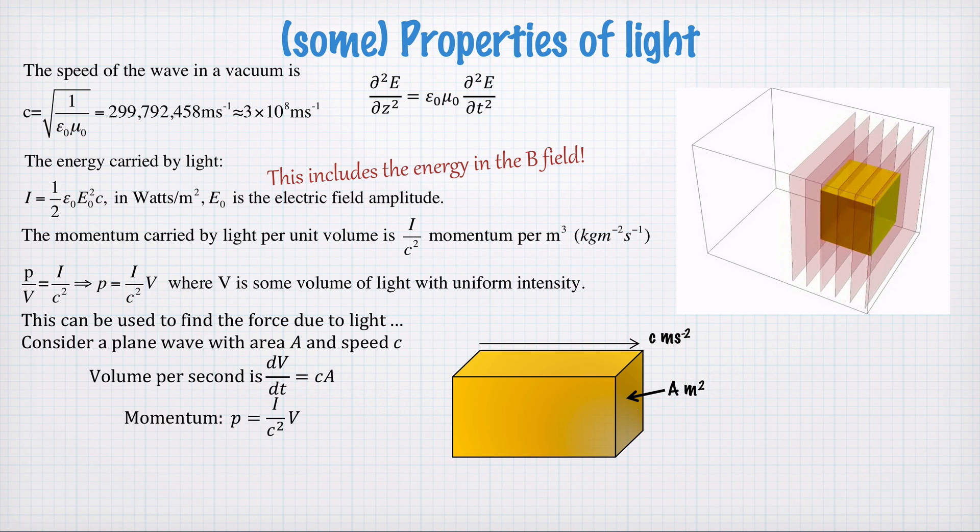The momentum, as we've said before, is I on c squared times V. So we can combine these two equations to calculate the force, remembering that force is dp/dt, the rate of change of momentum. So force is equal to dp/dt.